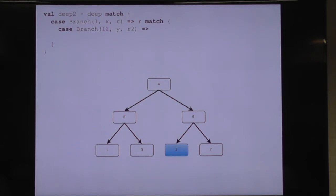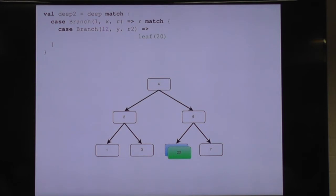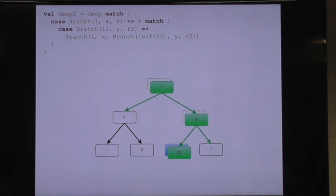We're taking our right subtree and pattern matching that apart into a branch with a left subtree — which is what we're interested in — and then a y and a right subtree. Now we're going to construct the node we want to replace node 5 with, by calling the leaf function on the value 20. But then we need to rebuild our way back up the spine of the tree. So to replace this 20 deeply nested inside the tree, we created a copy and then had to rebuild back up so that the root node points to the correct node.